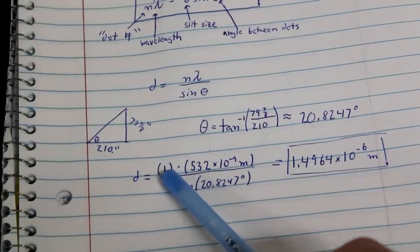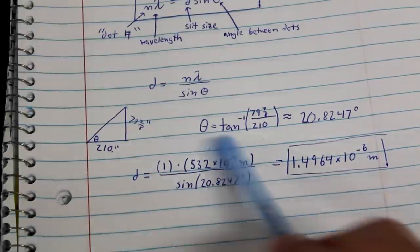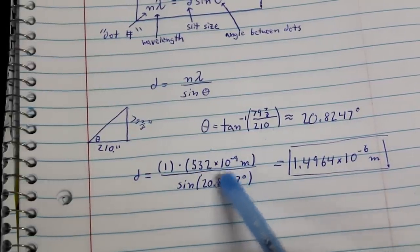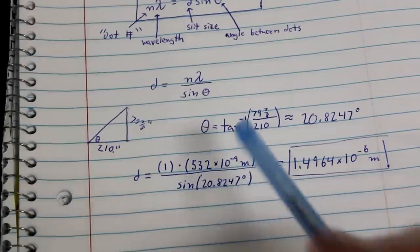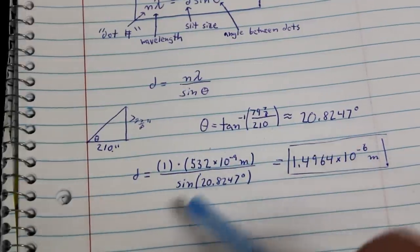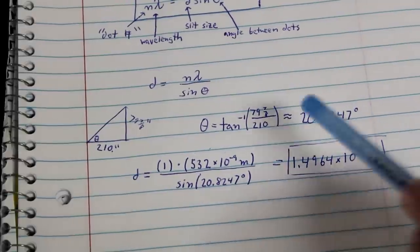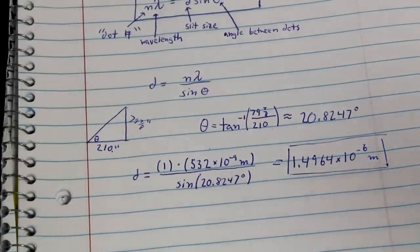And now if you notice I used one for n because it was the first dot, and then the wavelength of the green laser we're using is 532 nanometers, and there it is and just convert to meters. And then I just plug in the angle I found into the sine function there, and then here is my final result for the distance between slits on the CD.